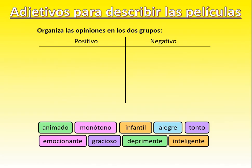Let's look at describing films, then we'll look at types of films. Put the subtitle 'adjetivos para describir las películas' - adjectives to describe films. Create two columns - positivo and negativo - and see how many of these adjectives you can guess are either positive or negative and what the English is. Pause, do as many as you can - there are quite a few new and non-cognate words, so we'll check when you're ready to unpause.